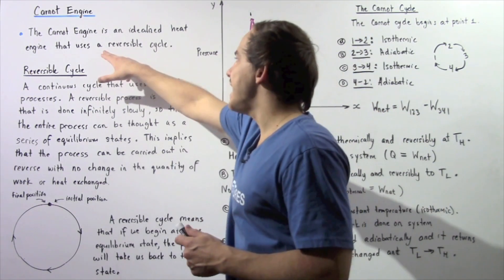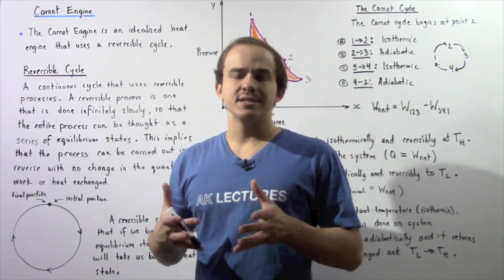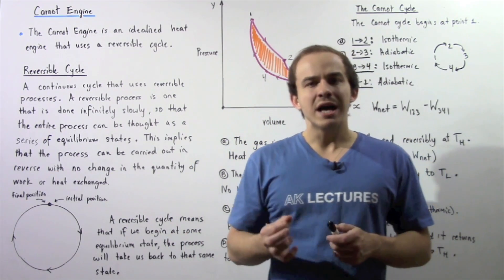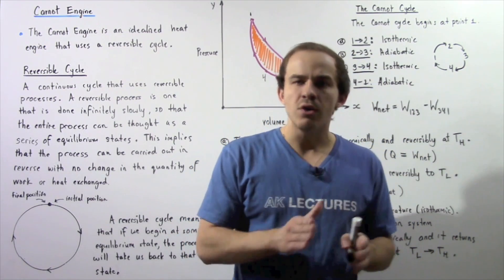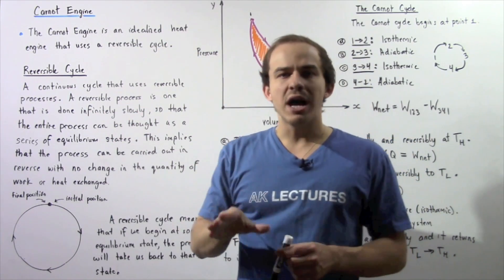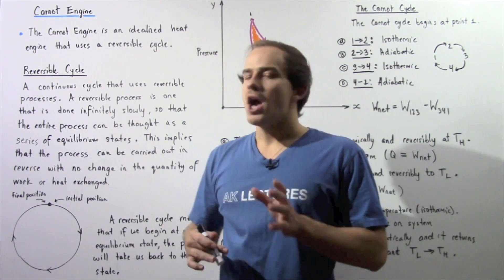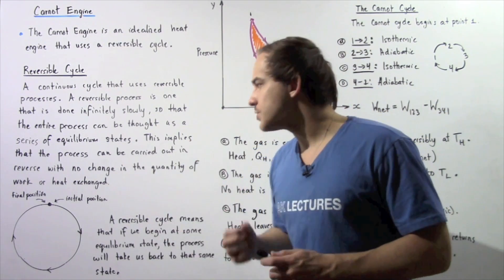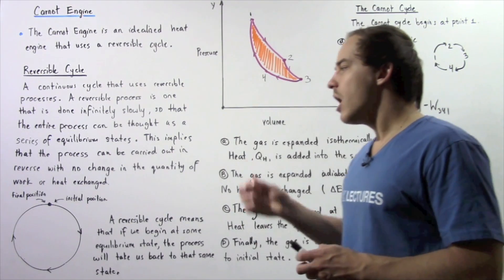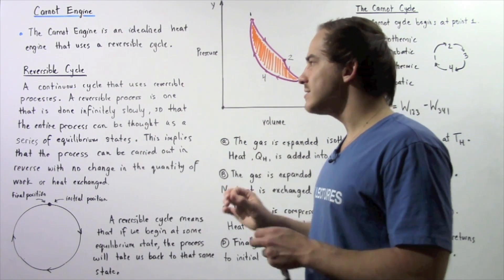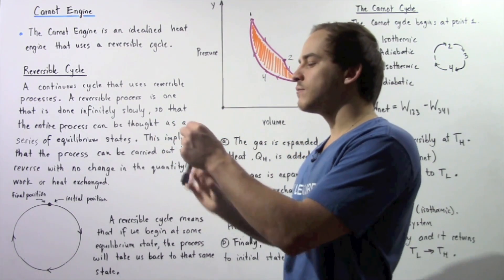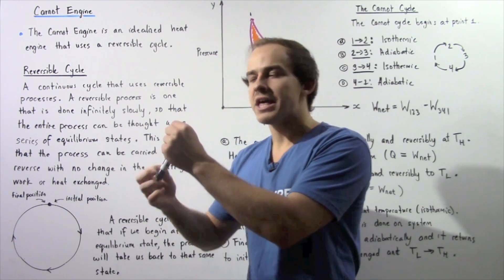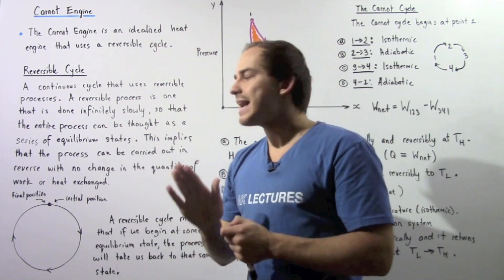A reversible cycle is essentially a continuous cycle that utilizes reversible processes. A reversible process is a process that is carried out infinitely slowly, so that the entire process can be thought of as consisting of a series of equilibrium states. This implies that the process can be carried out in reverse with no change in the quantity of work or heat exchanged — it takes us from the initial state and back, with the same amount of work required in both directions.